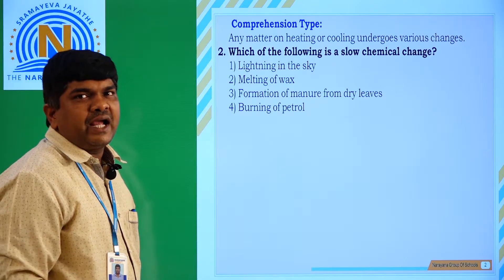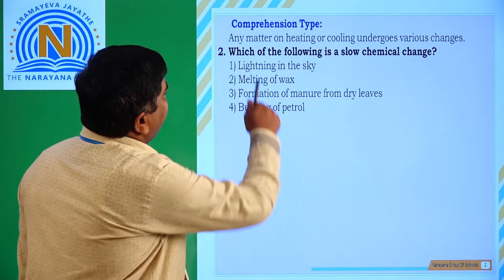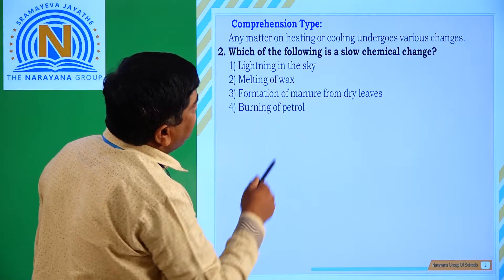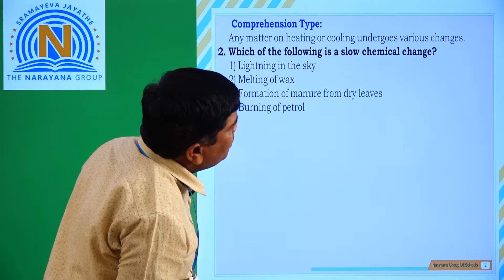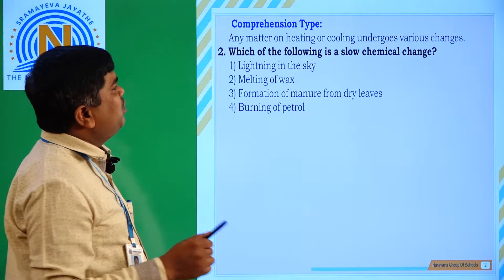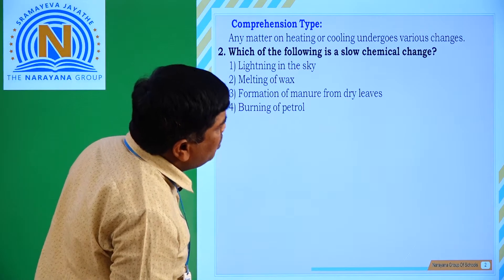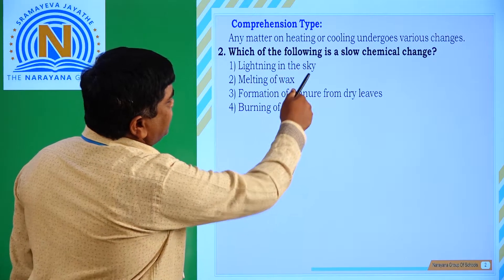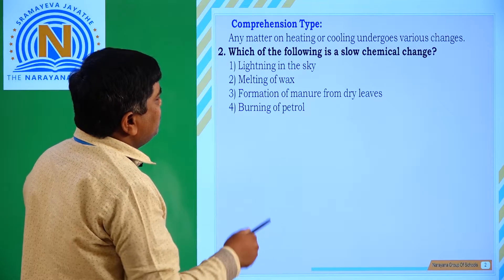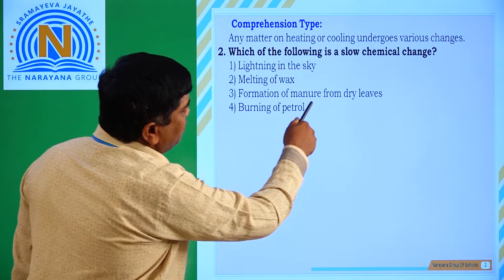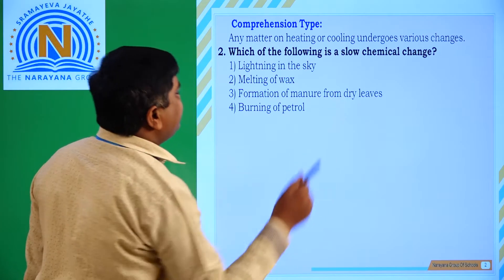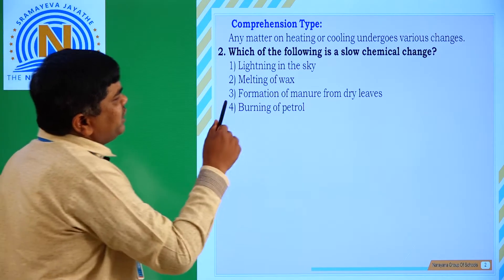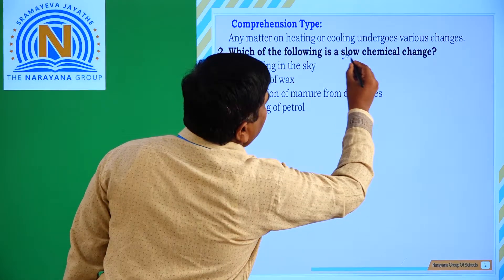Here the second question is a comprehensive type question. The given statement is: any matter on heating or cooling undergoes various changes. Question number 2: Which of the following is a slow chemical change? Options are: first, lightning in the sky; second, melting of wax; third, formation of manure from dry leaves; and fourth, burning of petrol.